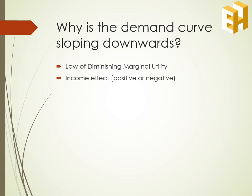Second reason is the income effect. If the price of a commodity decreases, the real income of the consumer increases, which makes him capable of consuming more units with the same level of income. Next, we have the substitution effect, explained by Marshall. He states that with the fall in price of a commodity, it becomes relatively cheaper, inducing the consumer to consume more of that commodity instead of other commodities which have now become relatively dearer.